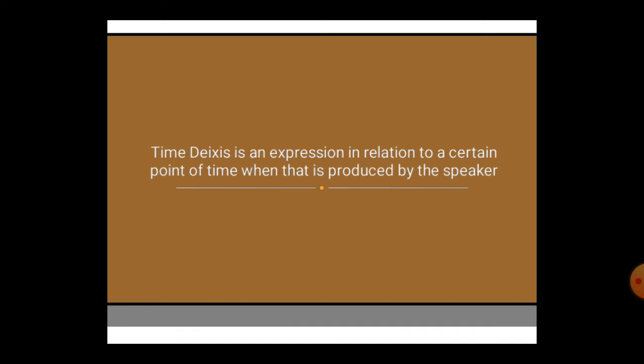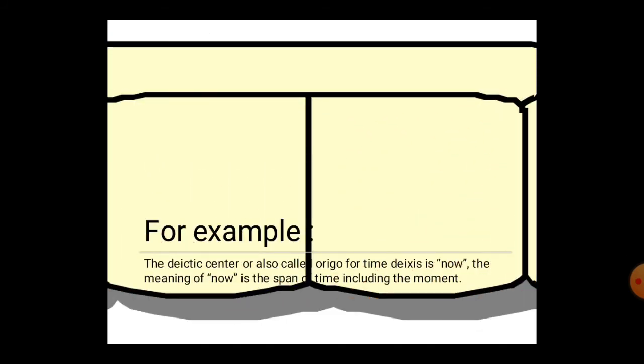The last is time deixis. Time deixis is an expression in relation to a certain point of time when that is produced by the speaker. The deictic center for time deixis is 'now'. The meaning of 'now' is the span of time including the moment. Time deixis is expressed in temporal verbs and adverbs.